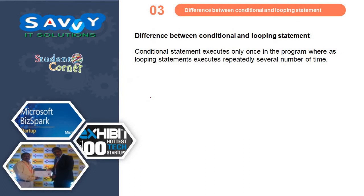Difference between conditional and loop statements: a conditional statement is used only once in the program, whereas a looping statement is used repeatedly several number of times.